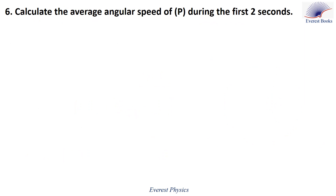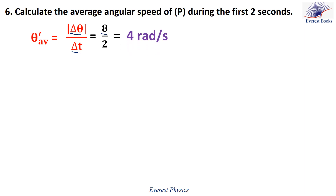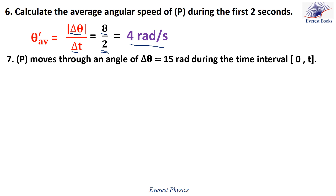Part six: calculate the average angular speed of P during the first two seconds. The average angular speed equals |Δθ| divided by the time taken. From the previous part, the angular displacement during the first two seconds is 8 radians, and Δt = 2 − 0 = 2 seconds. Therefore the average angular speed during the first two seconds is 4 rad/s.